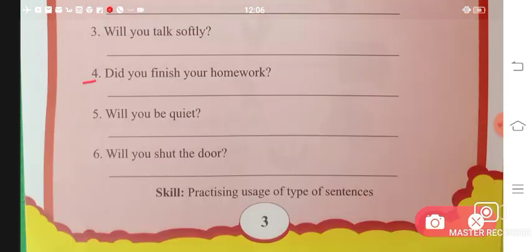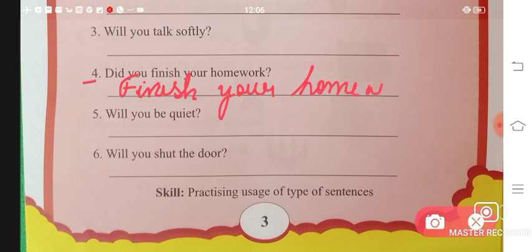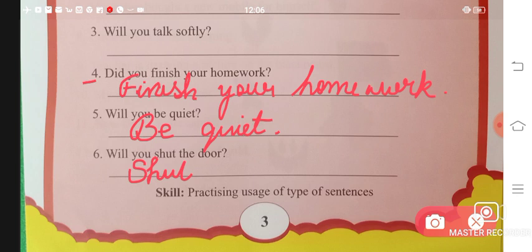Next is number four. 'Did you finish your homework?' To make it a command, remove 'did you' - 'Finish your homework.' Question mark won't come, full stop will come instead. 'Will you be quiet?' 'Be quiet.' Remove 'will you' from this case also and put full stop instead of question mark. 'Will you shut the door?' 'Shut the door.' Remove the 'will you' words and this also converts from question to command.